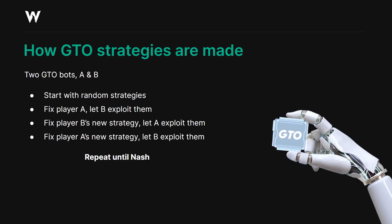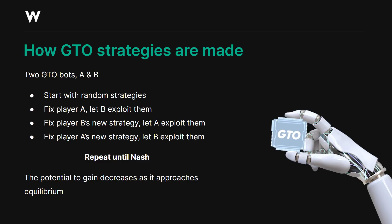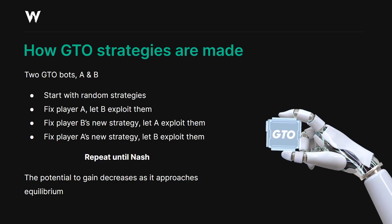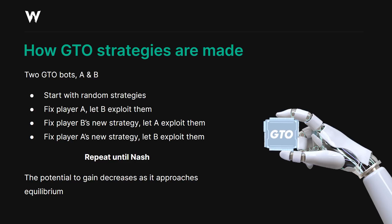As we do this, the potential to exploit A or B will decrease. We call this Nash distance. As the Nash distance decreases, you approach equilibrium until you reach a point where no player can really exploit the other. So when I say underlying exploitative dynamics, I mean every GTO solution is built on top of a set of potential exploits — A and B going back and forth. In order to understand why the GTO solution behaves as it does, you need to understand principles of exploitation.